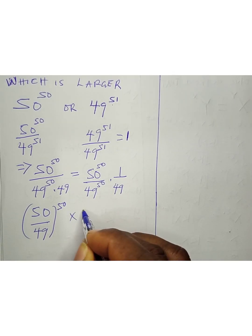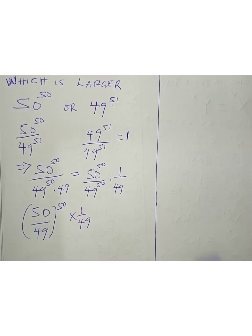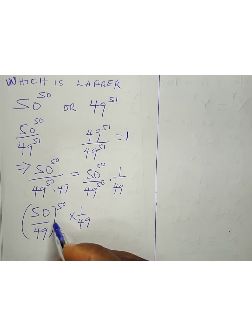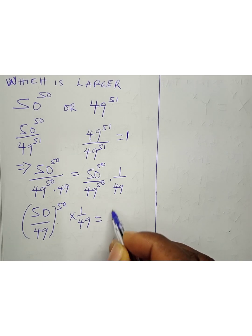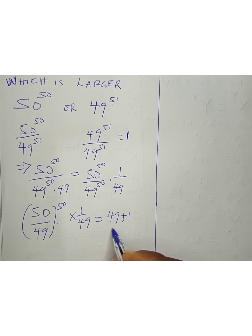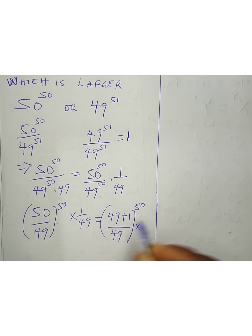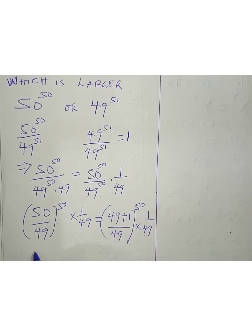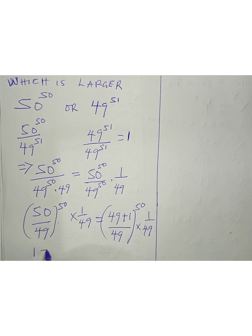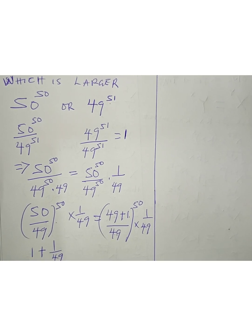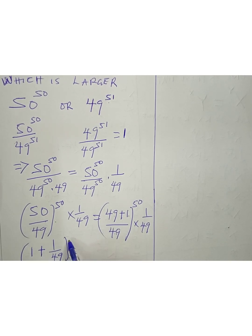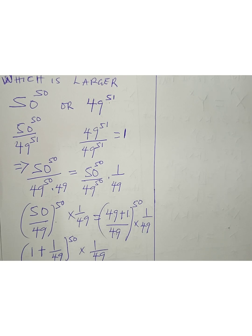So we have (50/49) to the power of 50, times 1 divided by 49. We can also express 50 as 49 plus 1, so that gives us (49 plus 1) divided by 49, raised to power 50, times 1 divided by 49. This becomes (1 plus 1/49) to the power of 50, times 1 divided by 49.